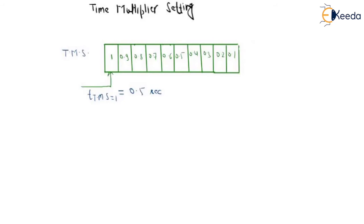So we know the formula: TMS required is equal to T required upon T of TMS equal to 1. This value is constant because this will be given when you purchase the relay. So T of TMS is equal to constant.